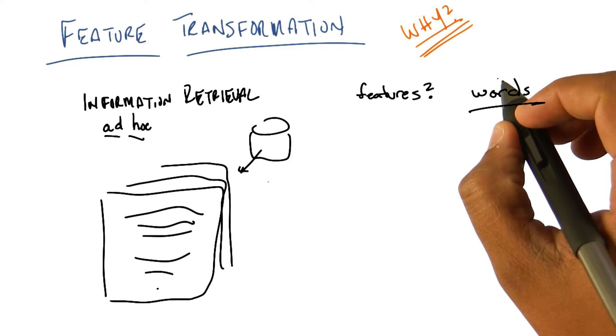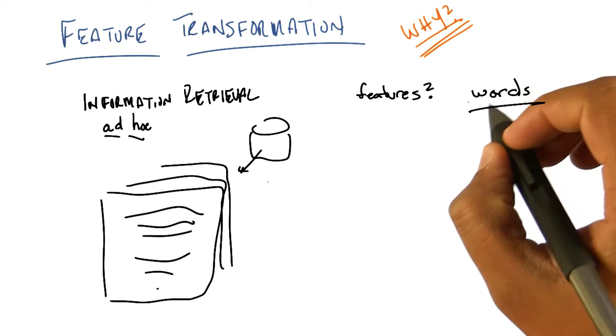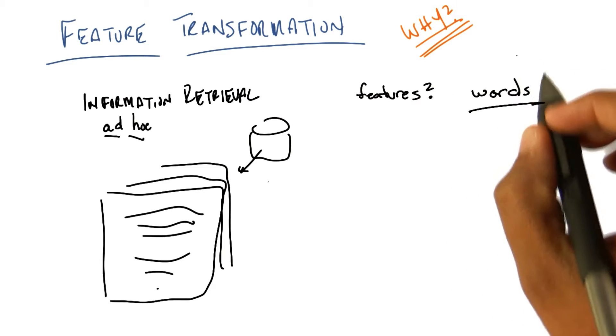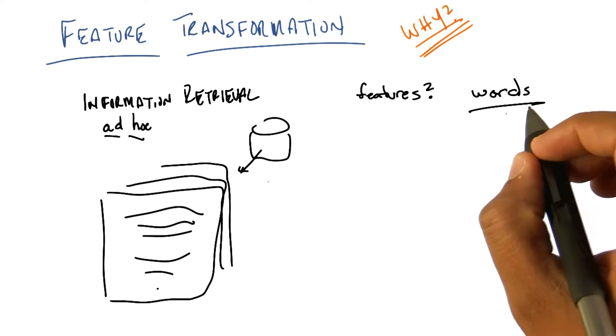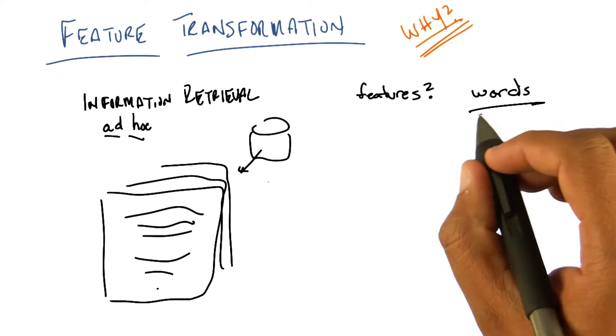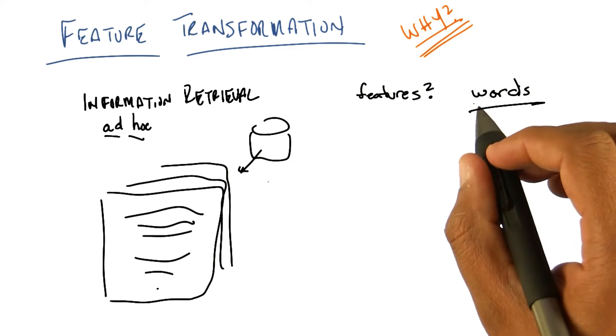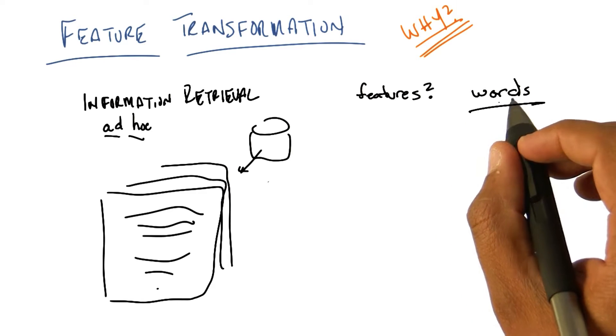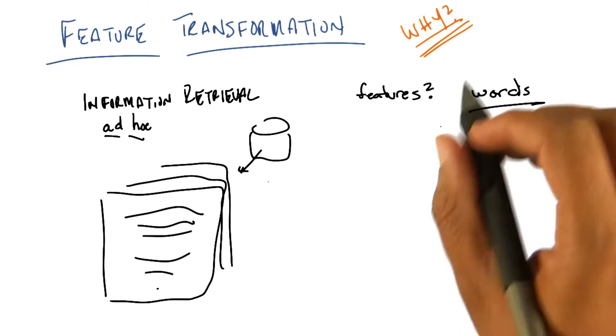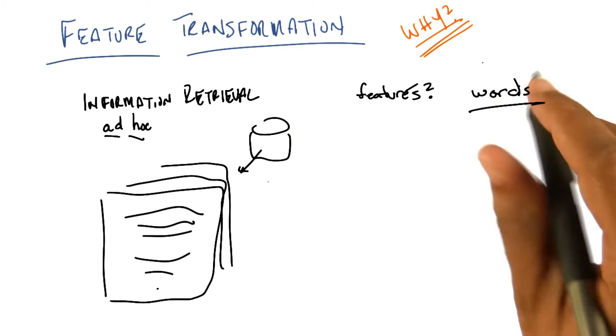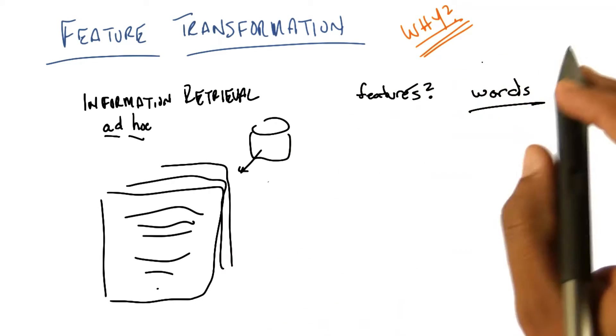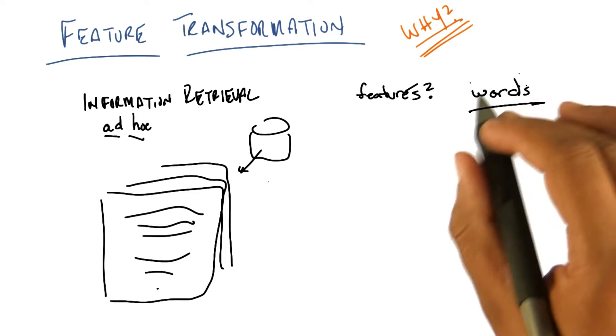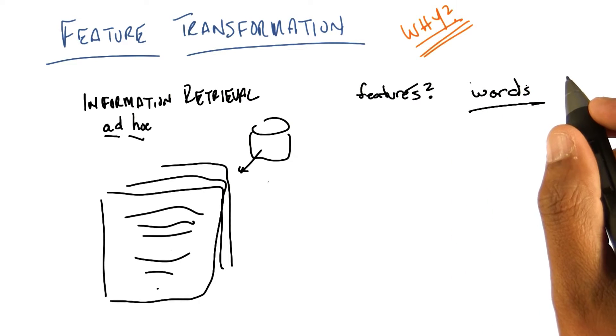And in fact, the very early retrieval systems, which predate both of us actually Michael, used simple things like words. Now, there's a lot of details to this you could imagine, like maybe you'd want to transform all plurals into their singular version, get rid of words like the, and there's a bunch of complicated stuff you might want to do, but it's not particularly relevant for this discussion. So just assume whatever you want to assume about the kinds of words that you have.